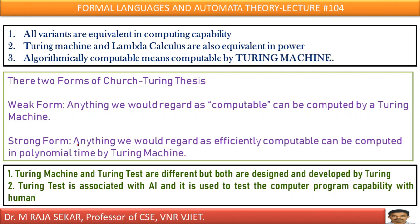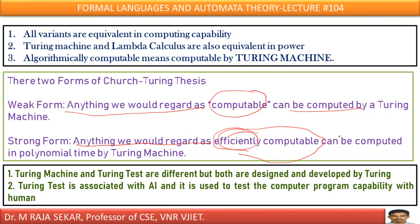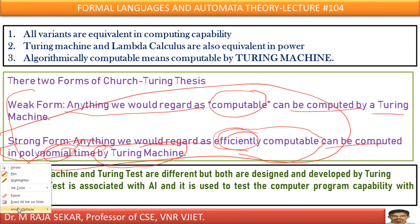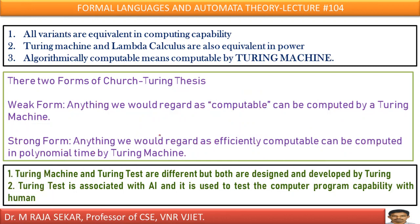The strong form states: anything we would regard as efficiently computable can be computed by a Turing machine in polynomial time. Comparing the two forms — in the weak form we have computability, while the strong form adds the word 'efficiently' and specifies polynomial time. Because of these two additional words — 'efficiently' and 'polynomial time' — this becomes the strong form of the Church-Turing thesis, which precisely addresses time complexity.